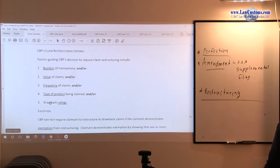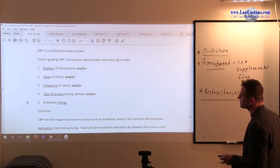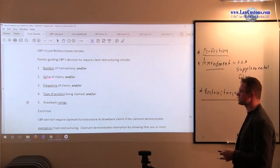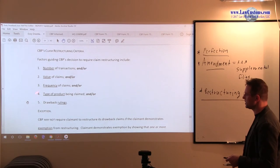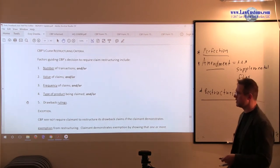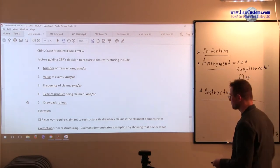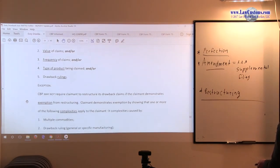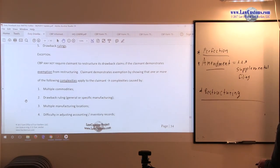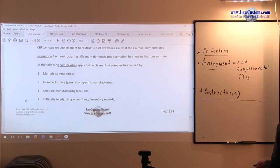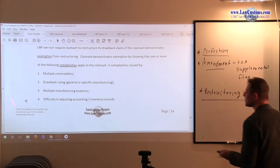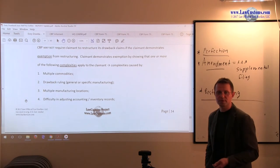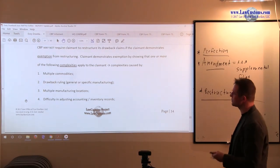As I mentioned before, the guiding criteria is mentioned in section 191.53, restructuring of claims. The factors for the CBP decision include the number of transactions, value of claims, frequency of claims, type of product being claimed, and drawback ruling. But customs may not require a claimant to restructure if one of the following things apply.